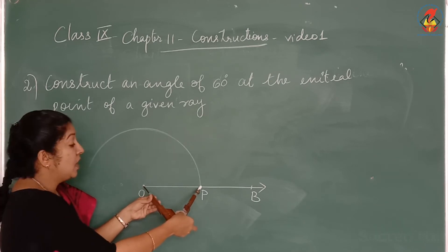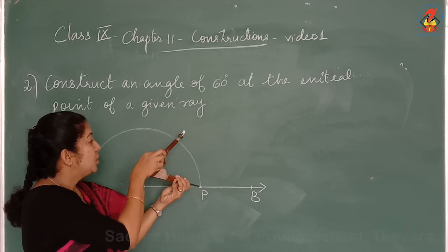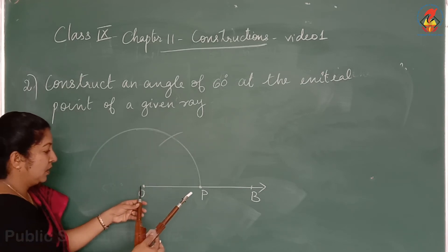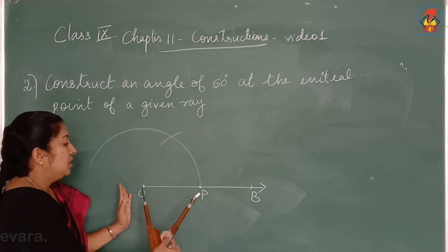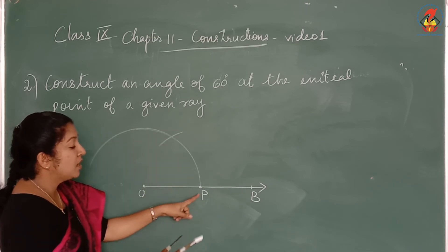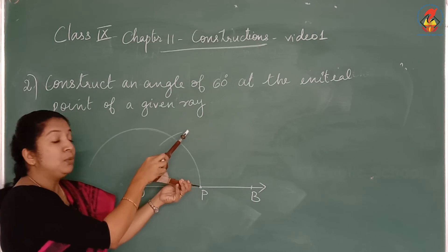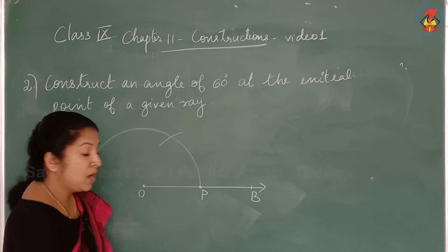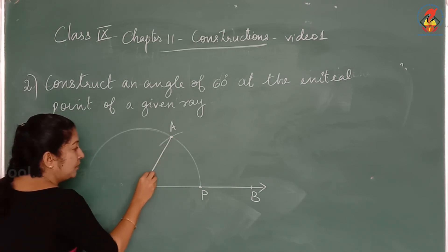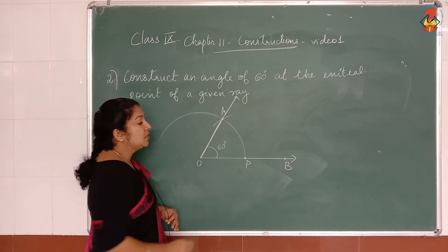First we draw an arc of any radius — do not change this radius. After that, take P as the centre and with the same radius draw an arc on the first arc. Mark this point of intersection as A. Join AO and extend it. This is the required angle. This angle is 60 degrees. So this is the construction of an angle of 60 degrees.